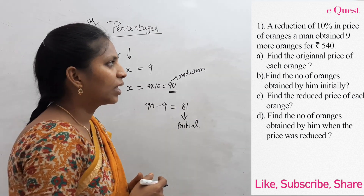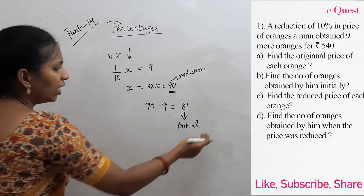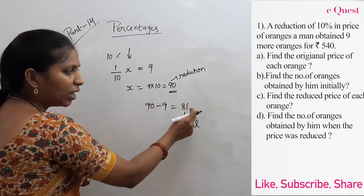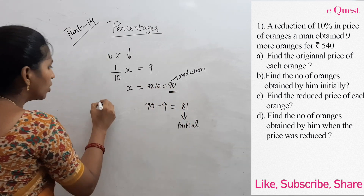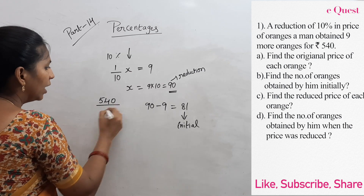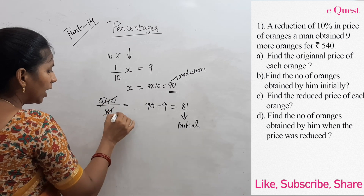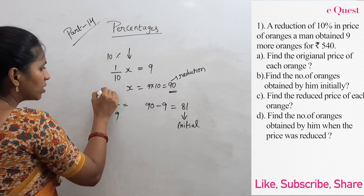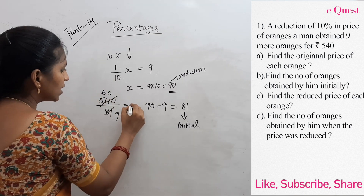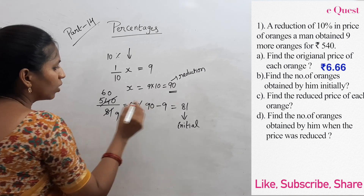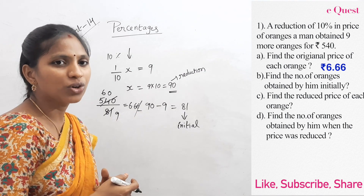Find the original price of each orange. Originally, a man obtained 81 oranges for 540 rupees. So 540 by 81 — cancelling, 9 times and 60 times, then 60 by 9, again cancelling, gives 6.66. So 6.66 rupees is the initial price of each orange.